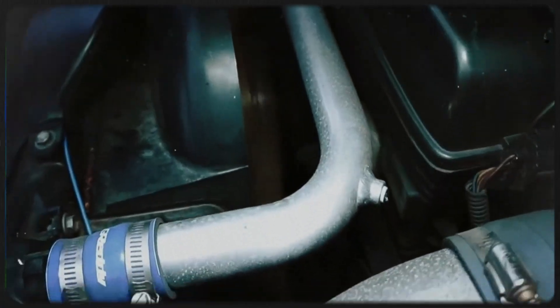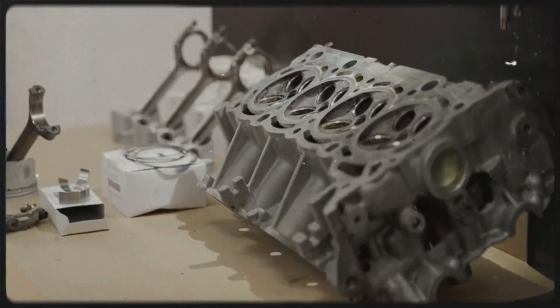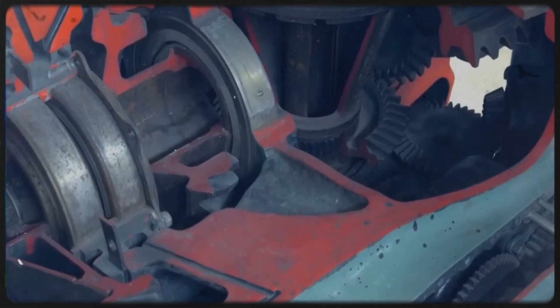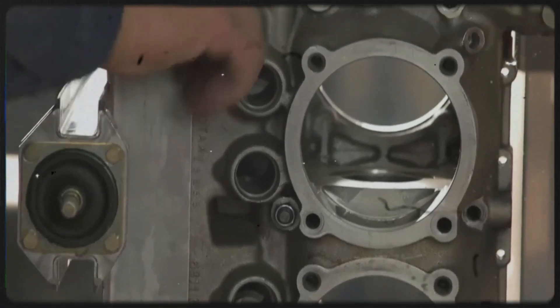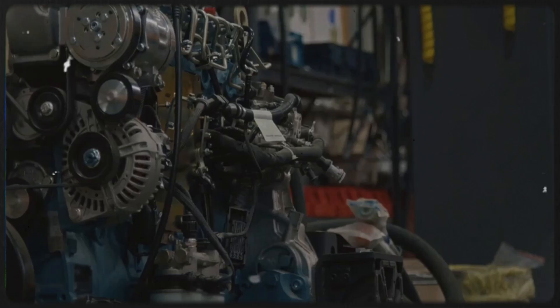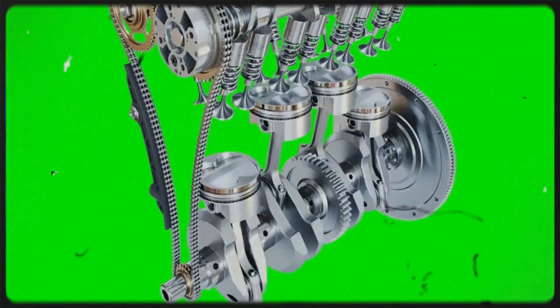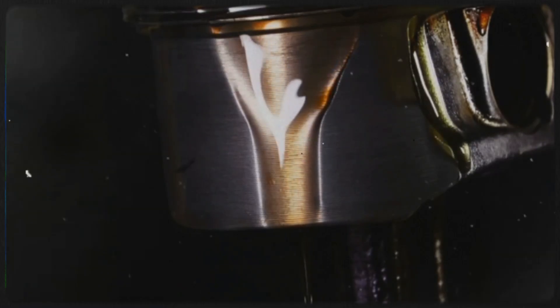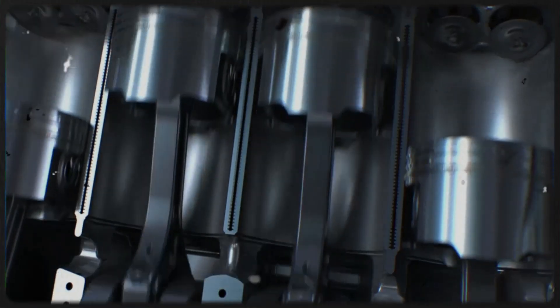So why does this mean diesel engines use less fuel? Well, because of the way combustion happens in a diesel engine, it can operate with much leaner air fuel mixtures. In other words, there's more air compared to fuel in the cylinder. This lean burn helps the engine run more efficiently and produce less waste heat. On the other hand, gasoline engines need a near-perfect air fuel mix to avoid misfires or knocking, typically around 14.7 parts air to 1 part fuel by weight, known as the stoichiometric ratio. Diesel engines, however, can run with ratios as high as 40 to 1 or even leaner in some cases.